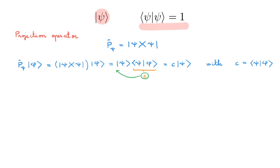So, what does the projection operator associated with the ket |Psi⟩ do? It acts on an arbitrary ket |phi⟩ and gives us another ket that is proportional to |Psi⟩. Additionally, the proportionality constant is given by the overlap between the initial state |Phi⟩ and the state |Psi⟩ that defines the projection operator. This is the reason why we call this operator the projection operator — it projects an arbitrary state onto the reference state |Psi⟩.